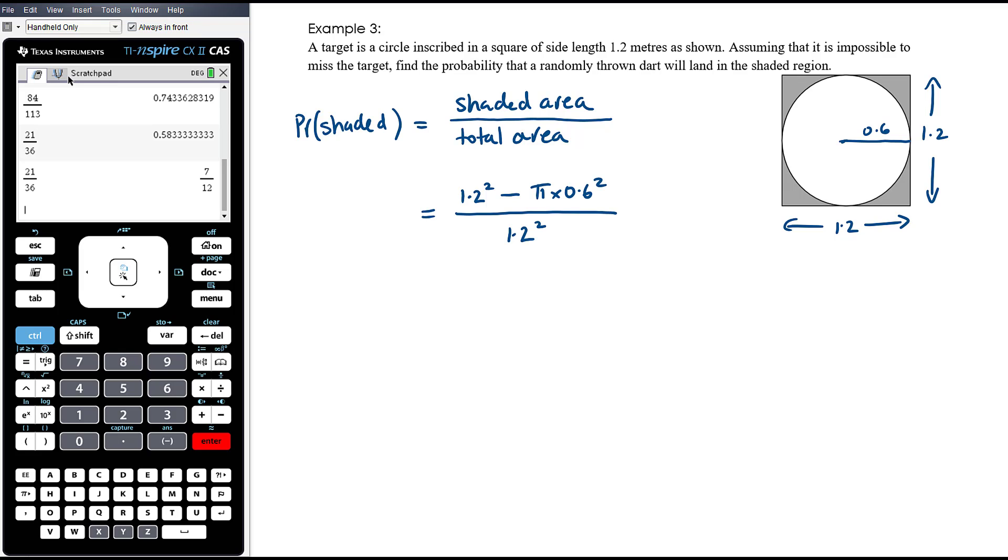Now I'm going to say correct to four decimal places here, because this is not very nice exactly. But if it doesn't tell you to give a rounded answer, then you should leave it exact. So 1.2 squared minus π times 0.6 squared over 1.2 squared. That is approximately to four decimal places 0.2146, the probability that a randomly thrown dart will land in the shaded region.